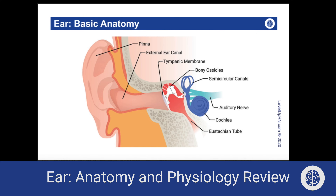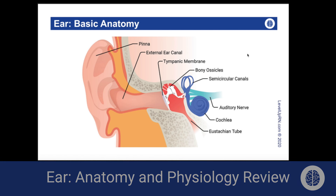The round and oval window separates the middle ear from the inner ear. In the inner ear, we have the cochlea, which contains the nerve cells responsible for hearing. And then we have the semicircular canals, which contain receptors for balance. Sound waves come in through the external ear canal, reach the tympanic membrane causing it to vibrate, and that vibration is passed along to the bony ossicles, through the oval window, and then reaches the cochlea. Inside the cochlea, hair cells translate those vibrations into electrical impulses, which are passed along to the auditory nerve — cranial nerve number eight — and then onto the brain, into the auditory cortex in the temporal lobe.